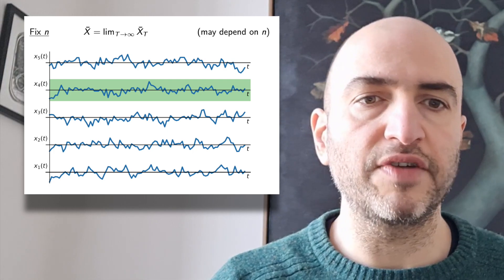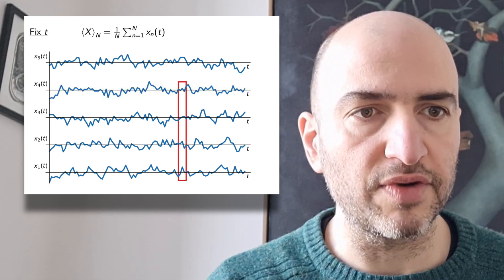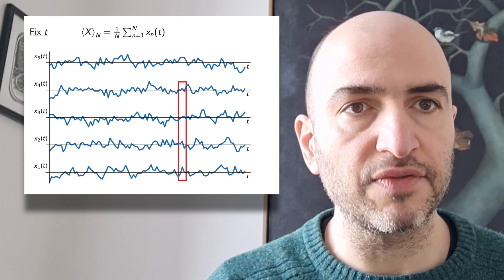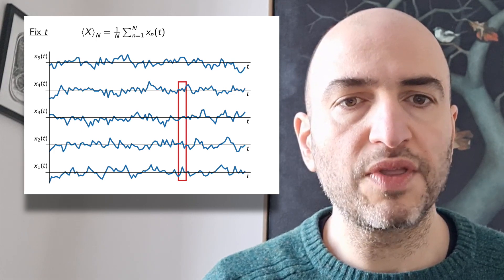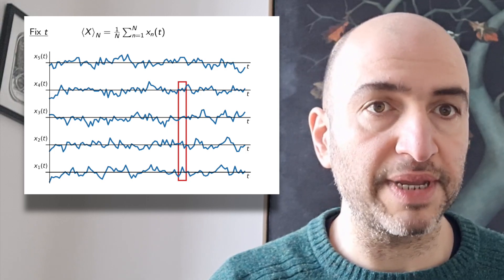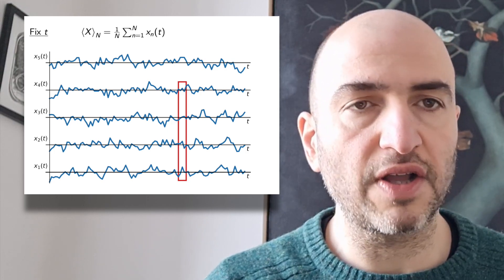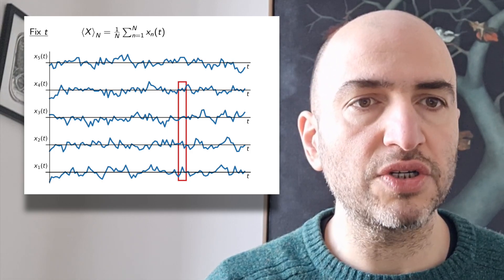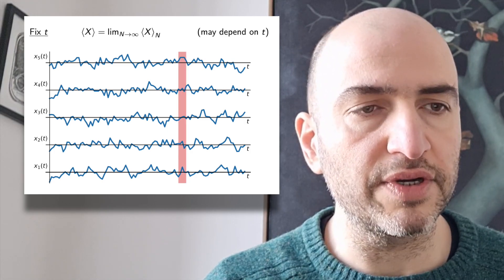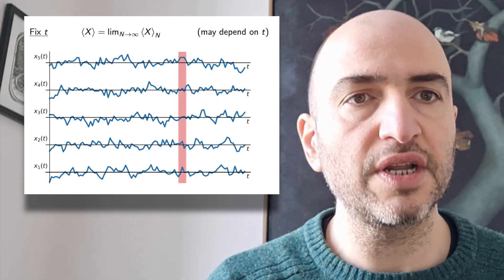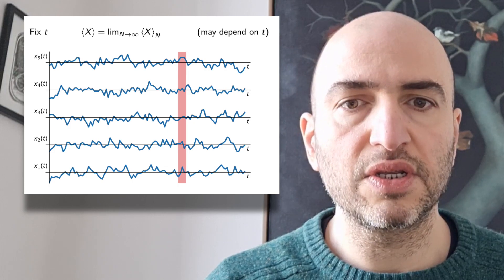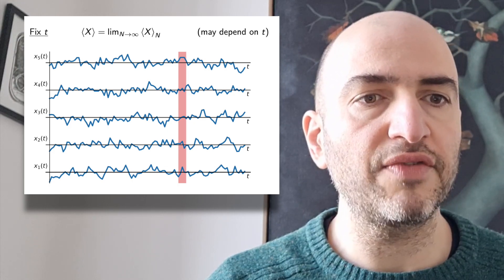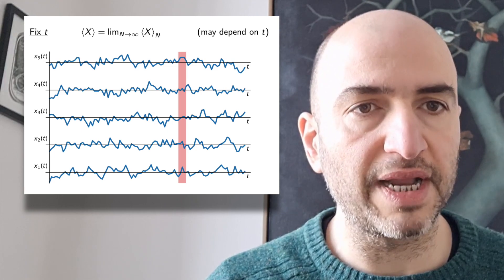The other type of average we can take is called an ensemble average, where we fix time and average vertically over many different systems. Where the number of systems is finite, we call this the finite ensemble average. And when we let the number of systems diverge, we call this the ensemble average, and we denote it with angled brackets. So x in angled brackets is the ensemble average, which is the average at a fixed time over many systems.